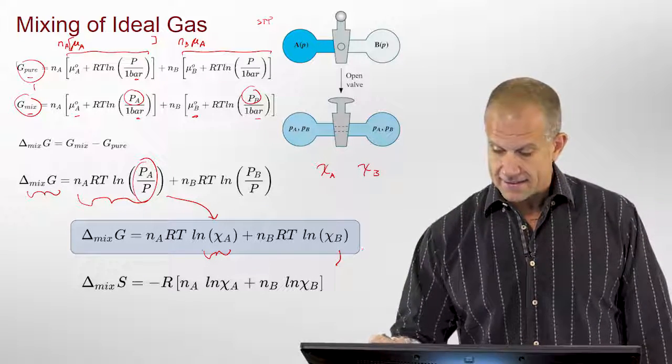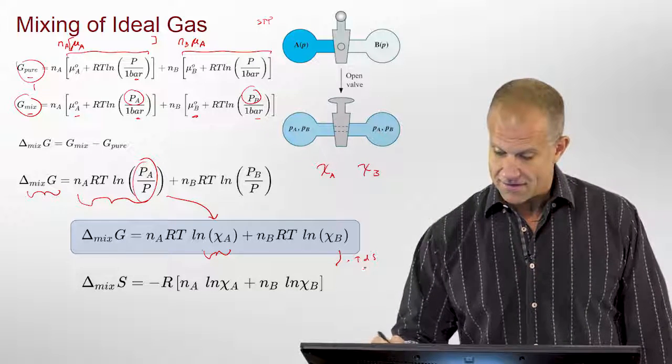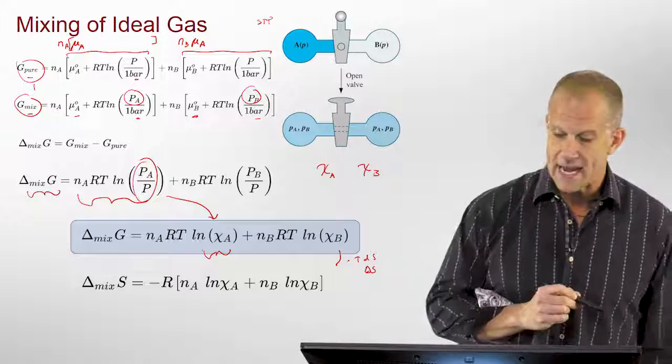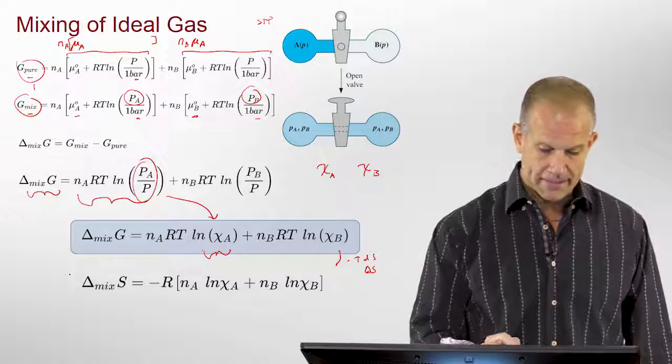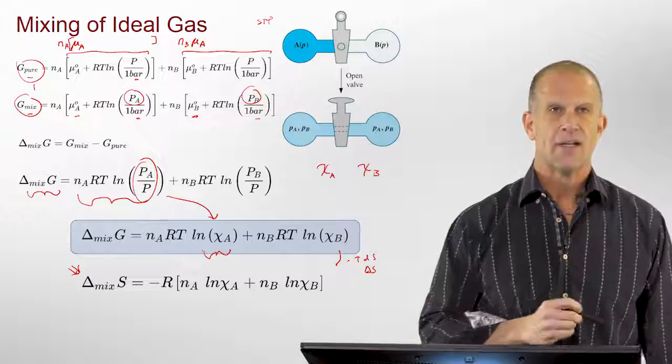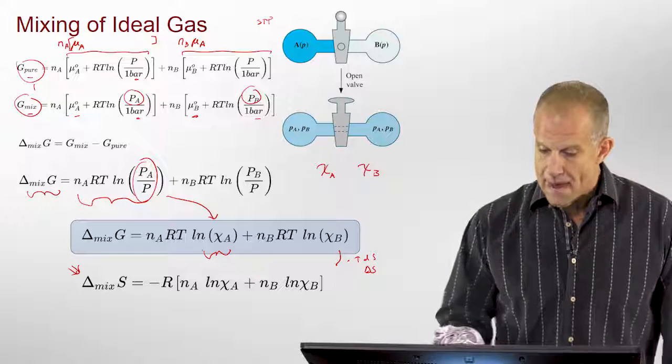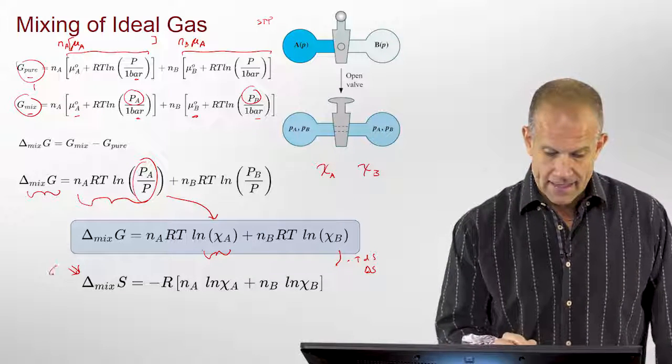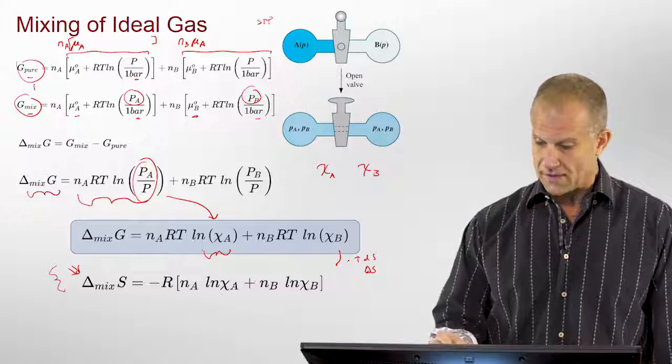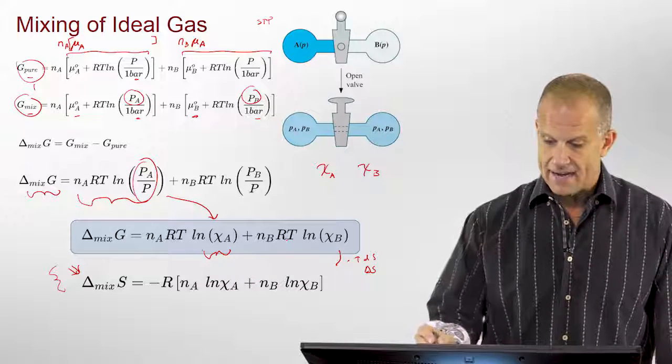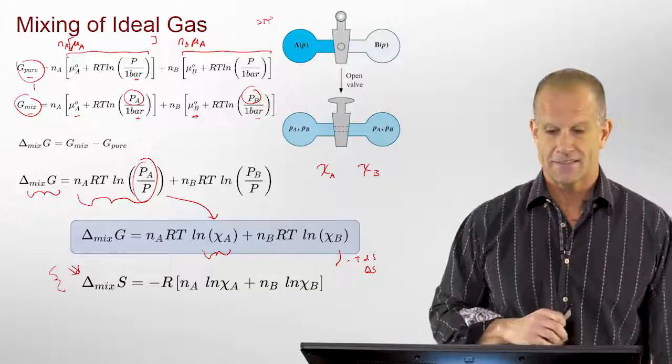Conversely, because we know that this is minus T delta S, this gives us a relationship to the entropy mixing, which is actually the way most of the time we derive this from the second law, that you get a maximum in the entropy of mixing as this gets towards a 50-50 mixture, and it minimizes the free energy of that system.